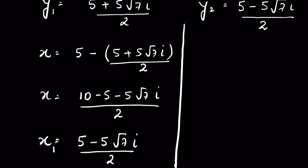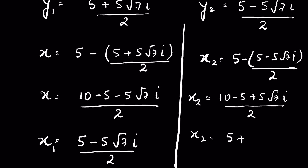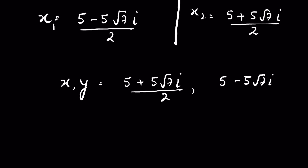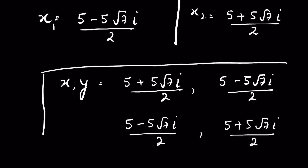Similarly, when y is (5 minus 5 times the square root of 7i) over 2, then x₂ equals (10 minus 5 plus 5 times the square root of 7i) over 2, which gives x₂ equals (5 plus 5 times the square root of 7i) over 2. So the two solution pairs for x and y are (5 plus 5√7i)/2 and (5 minus 5√7i)/2.